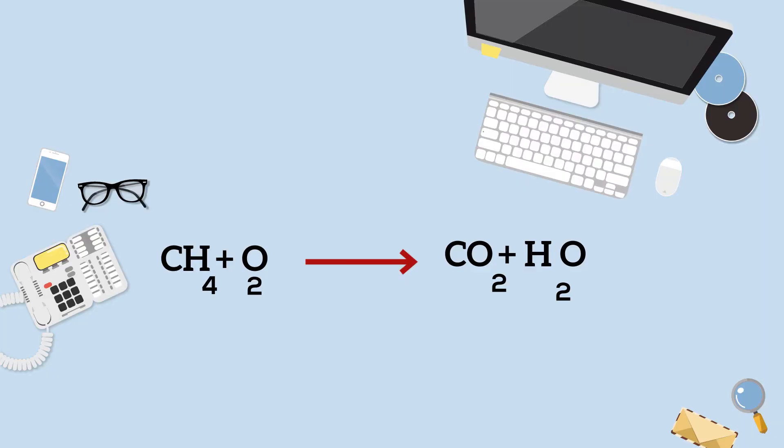Let's take a look at this chemical equation. On the left are the reactants. If you look at this, it has methane, which is CH4. The plus mark tells us reacts with, and then oxygen, which is O2.